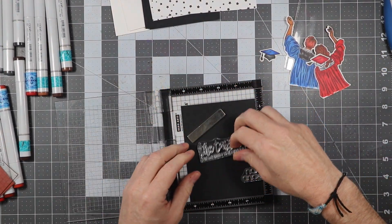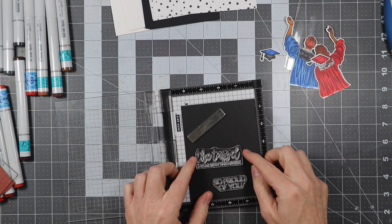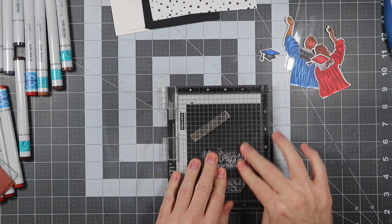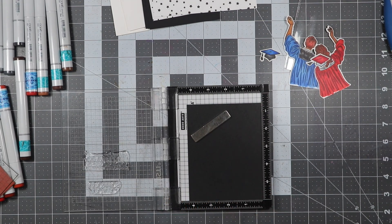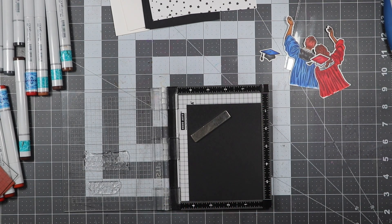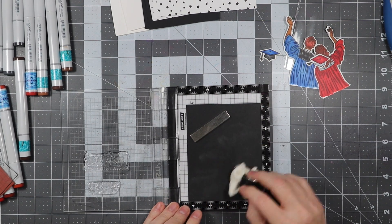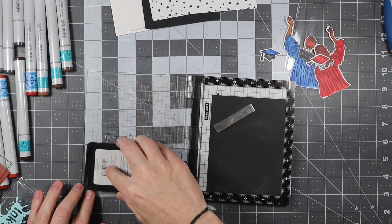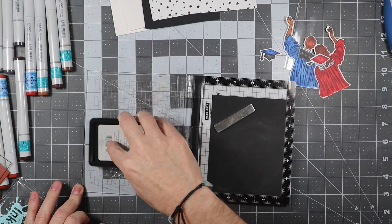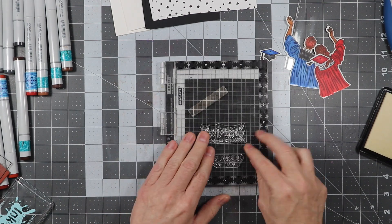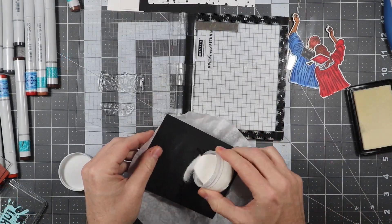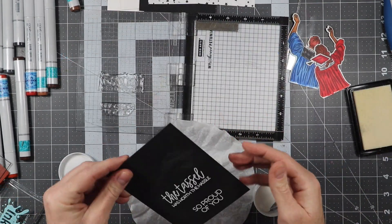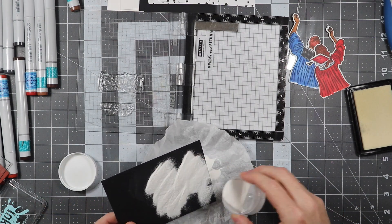The next thing we're going to do is go ahead and get the sentiments placed onto the black cardstock here. We're going to be doing some heat embossing with some white embossing powder. So we're just going to use the embossing buddy here, or the powder static tool, to go ahead and get that static off the paper.